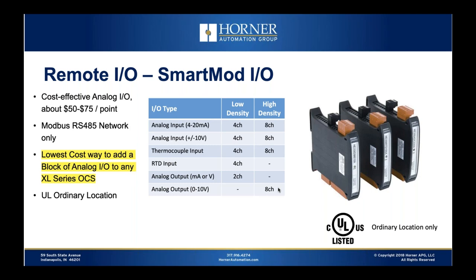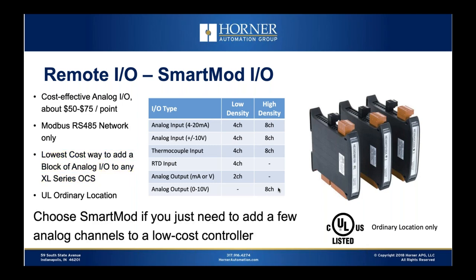SmartMod is a simple, cost-effective series that is primarily analog input, with analog output as well. It's cost-effective analog at around $50 to $75 per point on the input side, interfacing over Modbus RS-485 with any Horner product. It's truly the lowest cost way to add a block of analog I/O to any XL series OCS. Important: every I/O series discussed so far has a Class 1 Division 2 hazardous location rating, whereas SmartMod is ordinary location only.